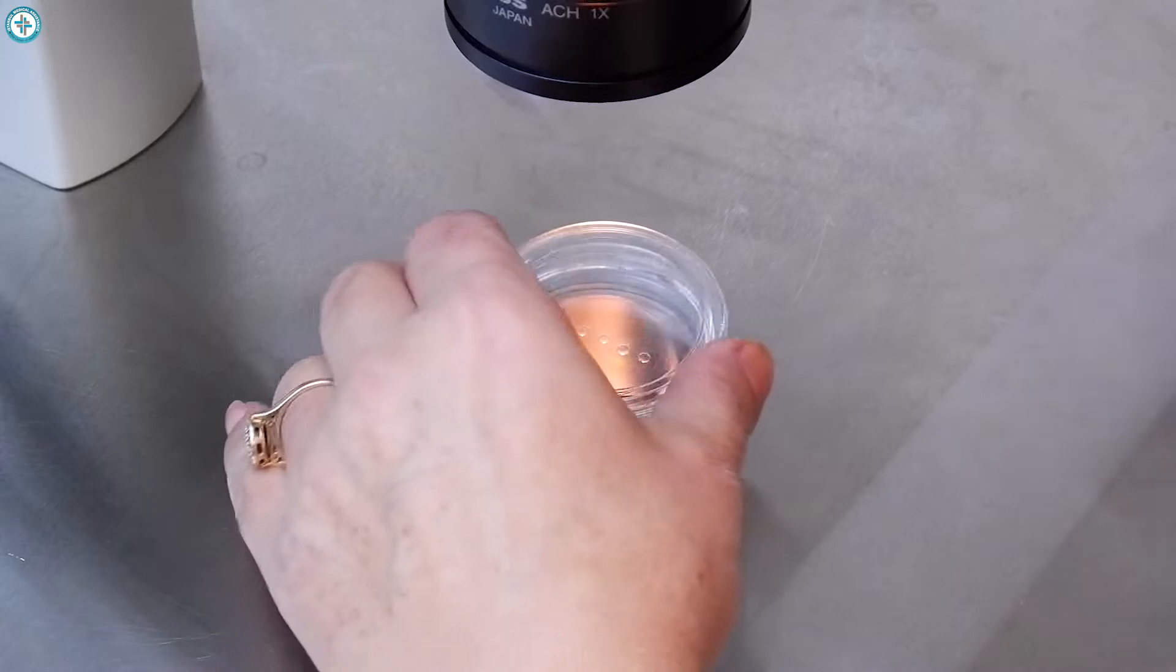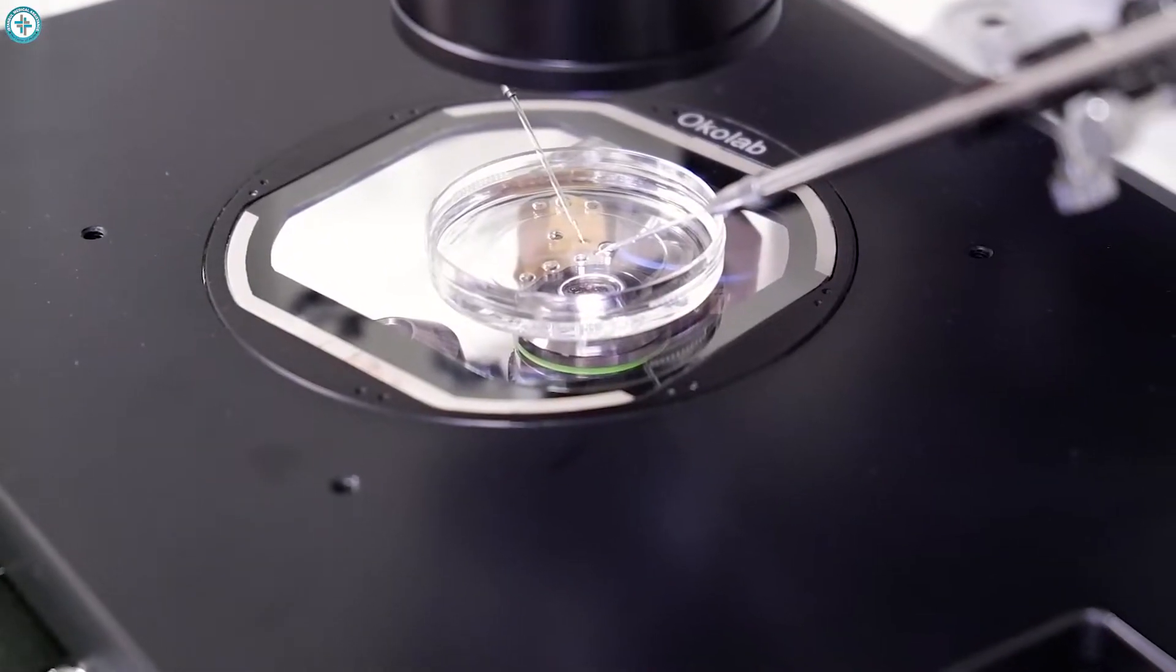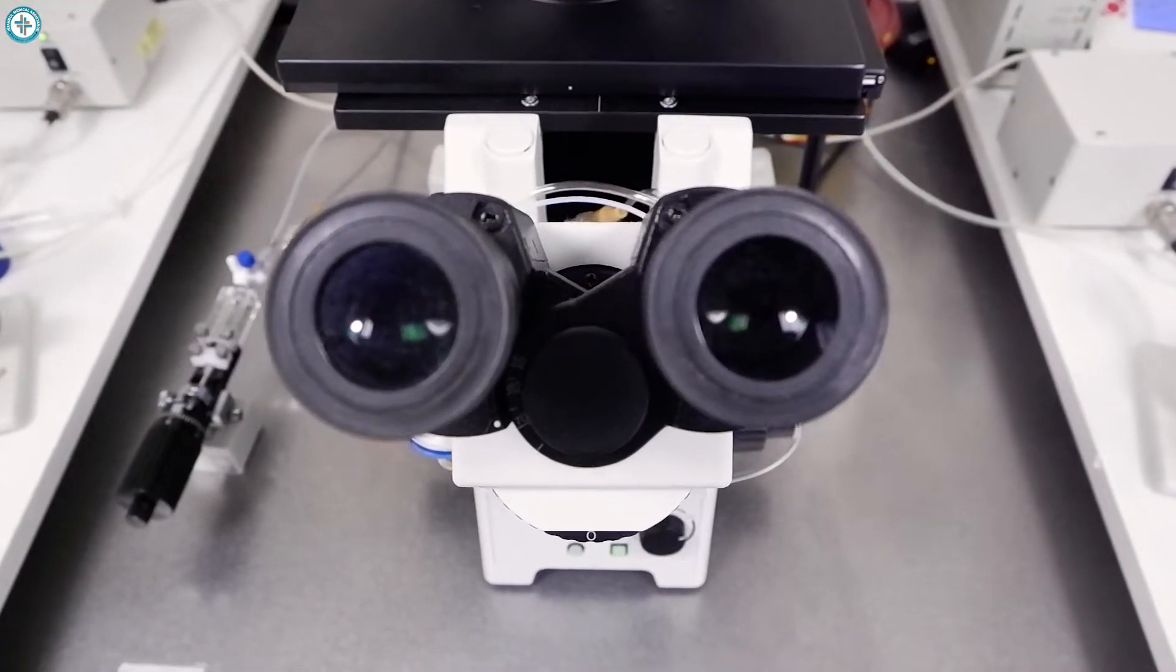Now it's time to prepare the sperm for the injection. She selects the good sperm and immobilizes them for injection by breaking their tail.